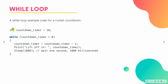We declare an integer variable called countdown_timer and set it to 10, as all good rocket countdowns start at 10 and count toward zero. We then use the while keyword — similar to how you write an if statement — and say: while the countdown_timer is greater than zero, execute this code. When it starts at 10, that condition is true, so it enters the loop.